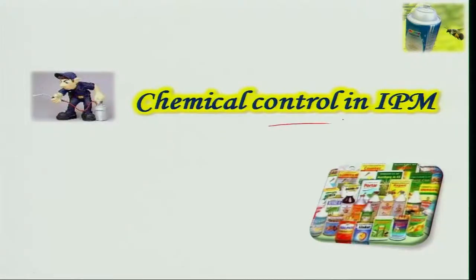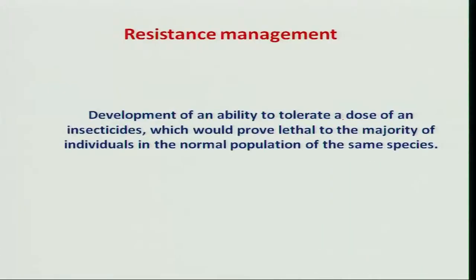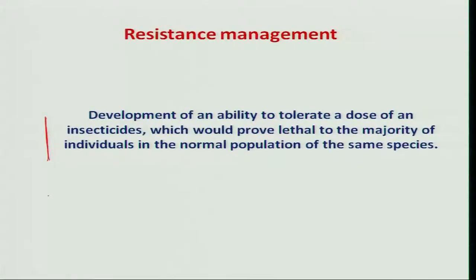To continue the discussion on chemical control in IPM, one of the next important aspects is insecticide resistance development and its management — why do insects develop resistance? In simple terms, insecticide resistance is the development of an ability to tolerate doses of an insecticide which would prove lethal to the majority of individuals of the normal population.